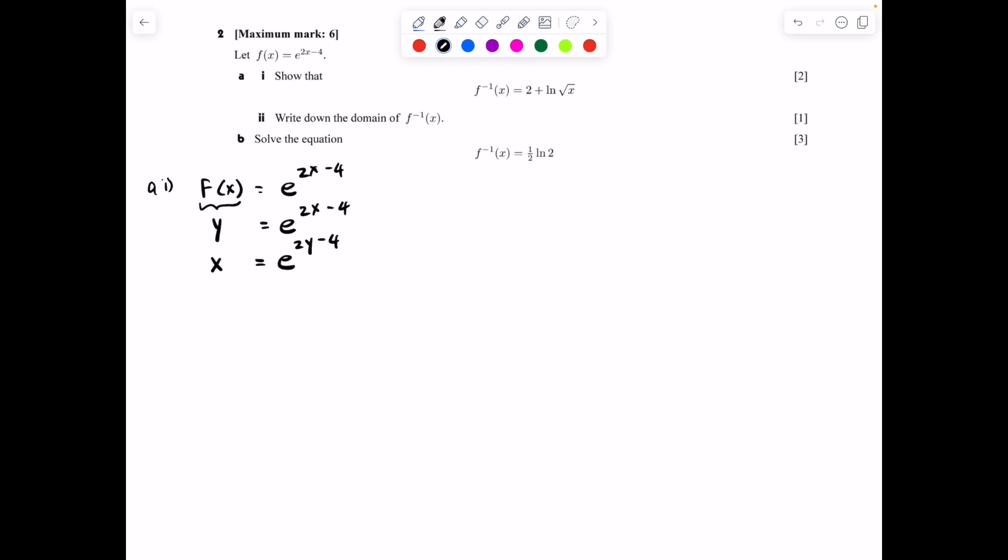Now we can isolate the y. So you may recall that the opposite of an exponential function is a ln function. So we're going to take the ln of both sides. And we end up getting ln x = 2y - 4, and now the whole purpose of taking the ln of both sides here was that we can just now write 2y - 4.